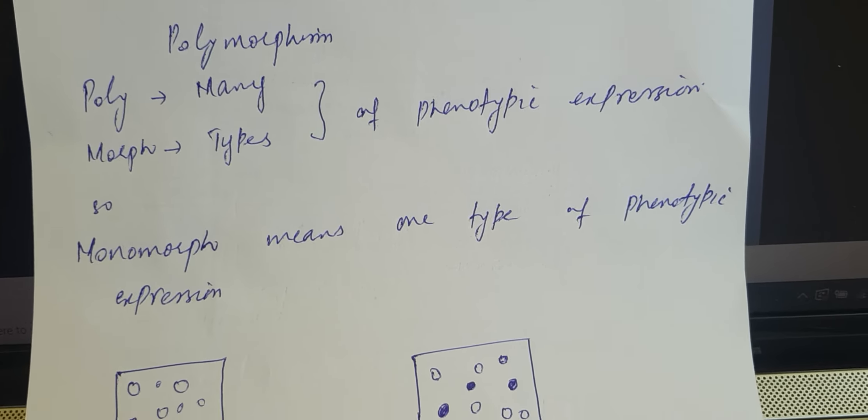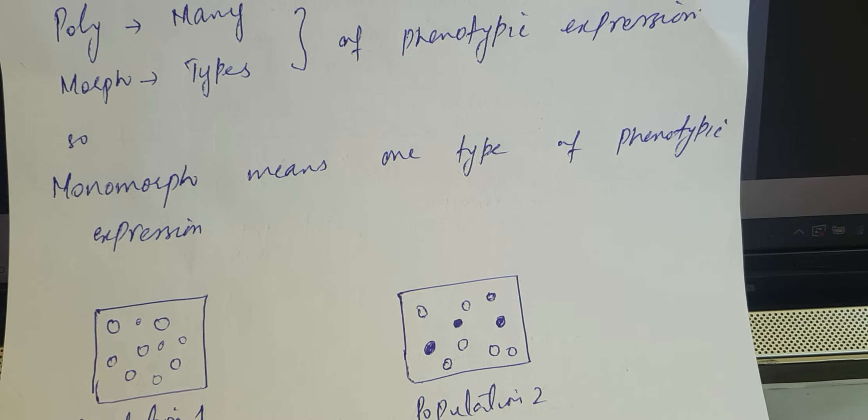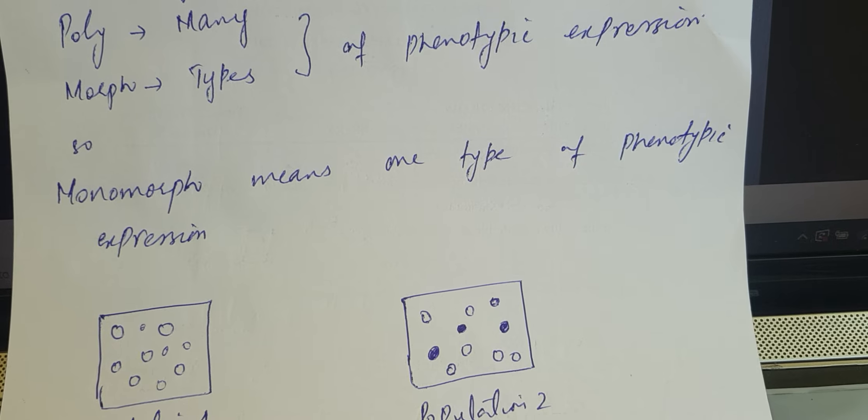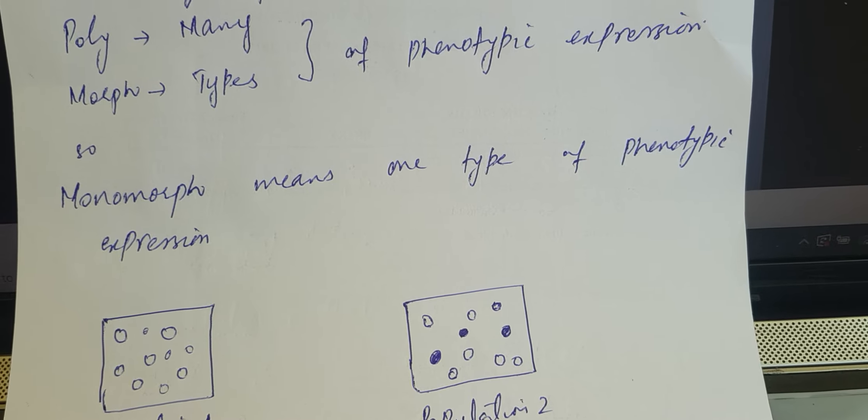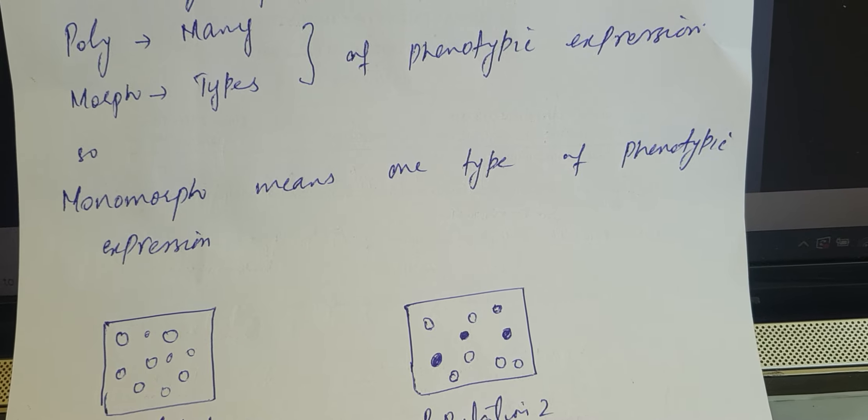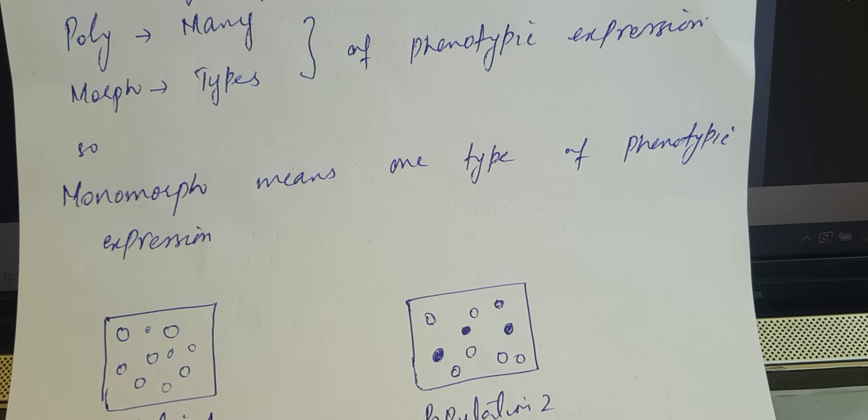In contrast, monomorphism means one type of phenotypic expression, which is the characteristic of a different population.